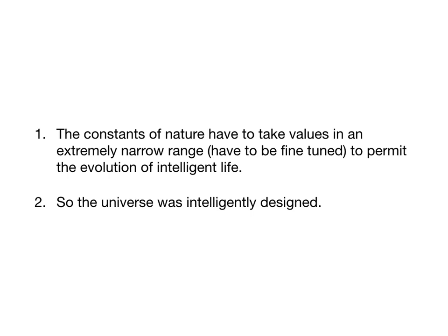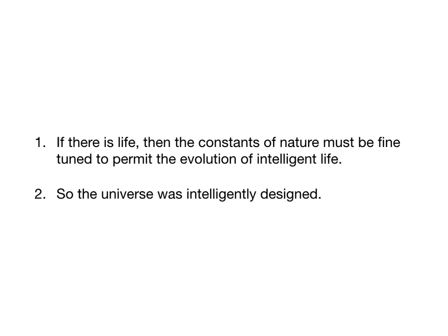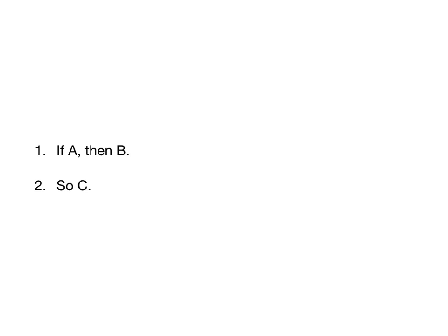You probably don't have the materials yet to see what the logical form of this argument is — it uses the idea of a necessary condition, which we'll talk about more when we get to formal logic and conditionals. But premise 1 is best interpreted as an if-then statement: "If there is life, then the constants of nature must be fine-tuned to permit the evolution of intelligent life, so the universe was intelligently designed." The form is: if A, then B, so C. Obviously, this is not valid — there are a couple of gaps here.